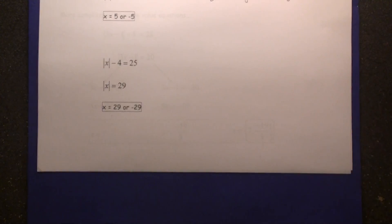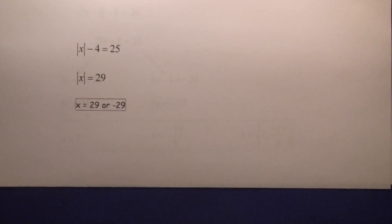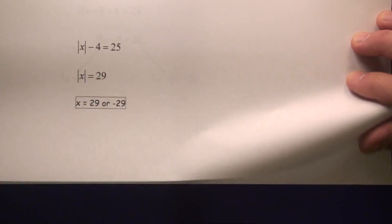Let's take a look at another example. We have the absolute value of x minus 4 equals 25. If you add 4 to both sides, you get the absolute value of x equals 29. The answer is x equals 29 or negative 29.